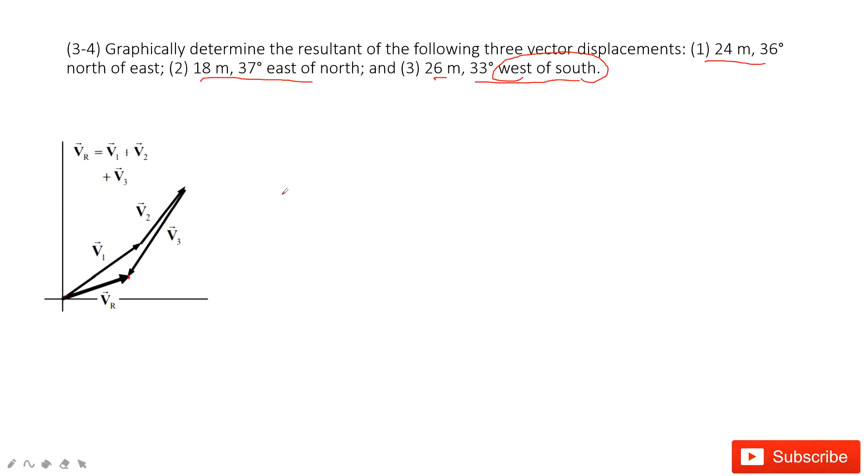If you want to solve the problem, I suggest you write the vectors into components i and j. In this way, we can write v1 as 24 sin 36 degrees i and 24 cos 36 degrees j.